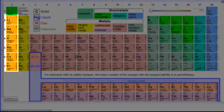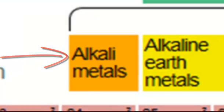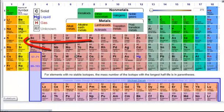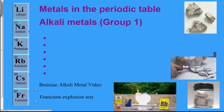On the first page, group one, the group name is called alkali metals — spelled A-L-K-A-L-I. We're talking about this orange column here, not the hydrogen element. Hydrogen is in that column but is in its own category. The alkali metals are lithium, sodium, potassium, rubidium, cesium, and francium.